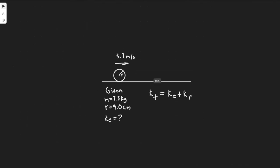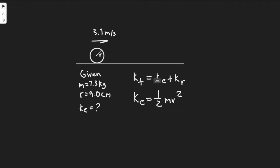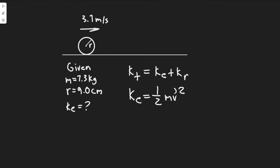You should know that the formula for the translational kinetic energy is 1 half mv squared. So that's the formula we would use, but we also have to add the rotational kinetic energy.